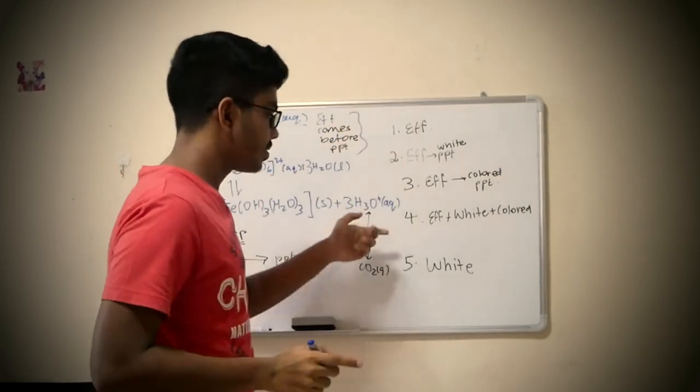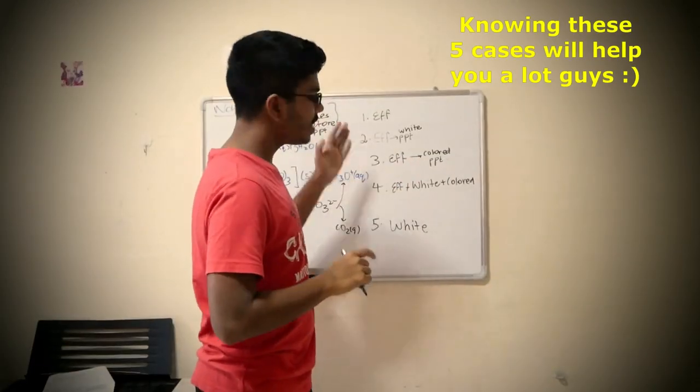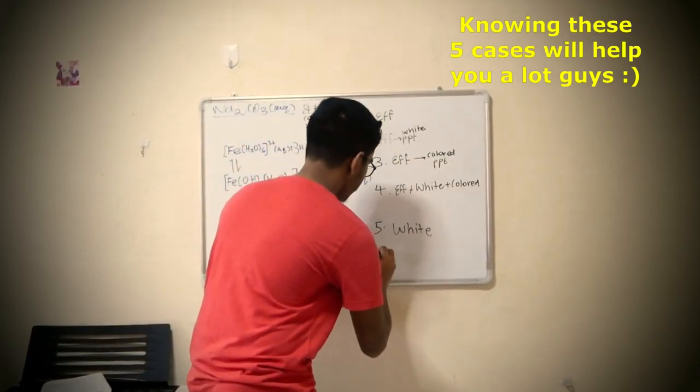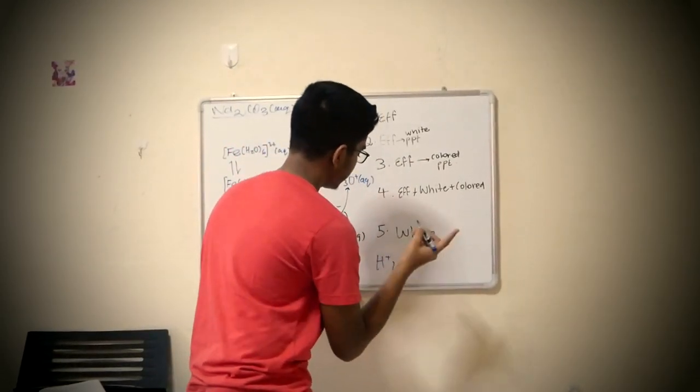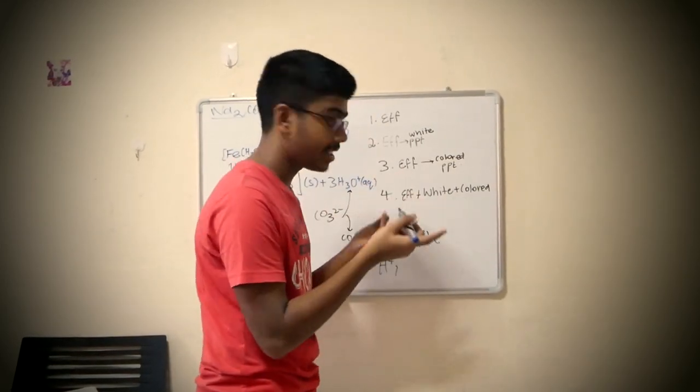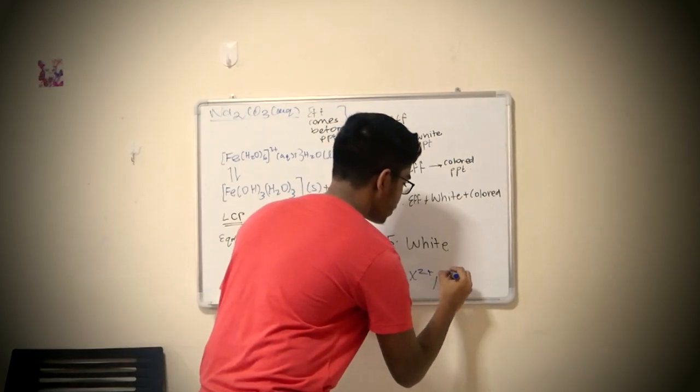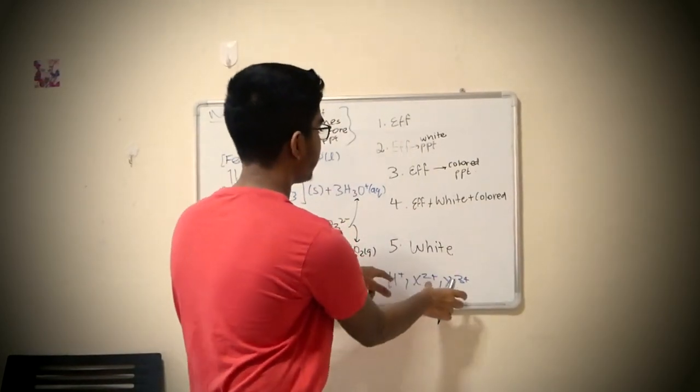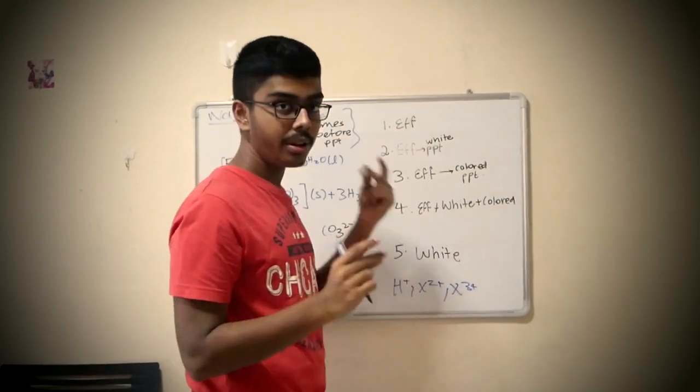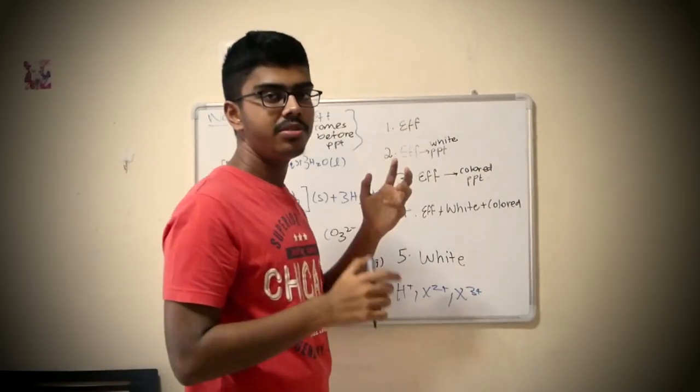If you move to these five scenarios, Cambridge does this test. There are five cases. Let's have three things that could be inside the test tube: H+, some 2+ ion, and some 3+ ion. Let's try to fit each of these in each of these categories. Follow along with me.